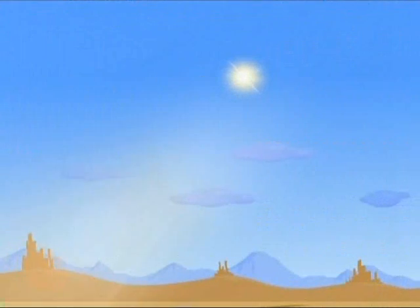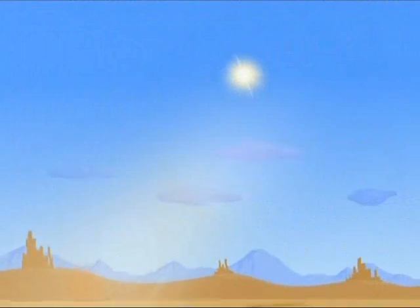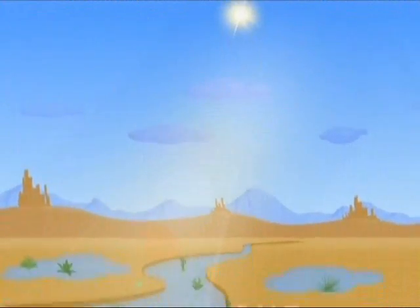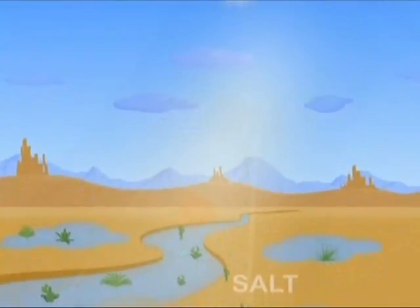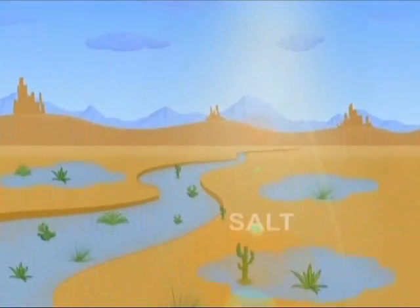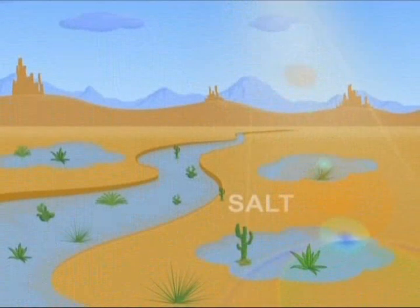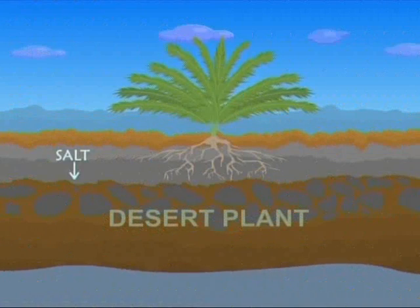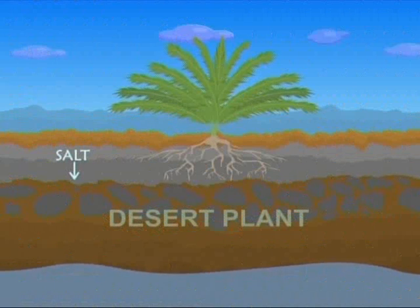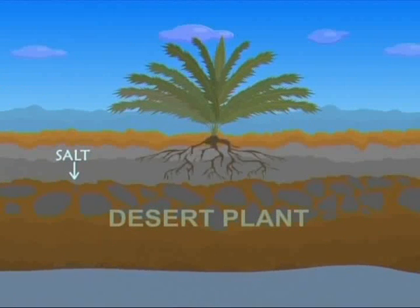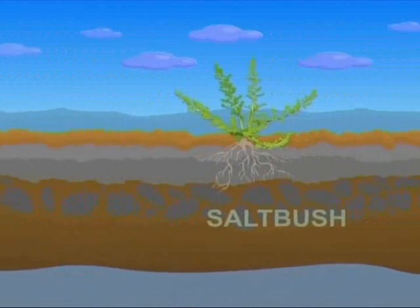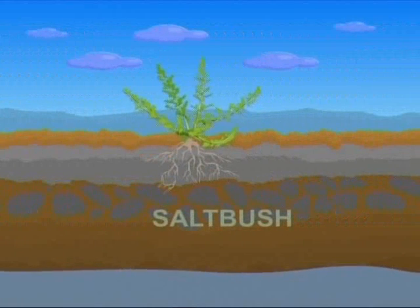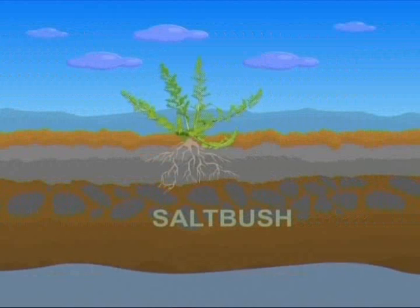After the sun comes out, pools and puddles left by the flood dry up, leaving the salt behind, which in turn spells danger for the plants. The salt makes it hard for the plants to soak up water and finally kills their roots. But there are some shrubs that have learned to survive even in salty soil.